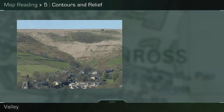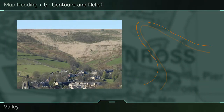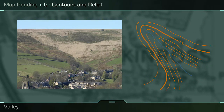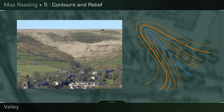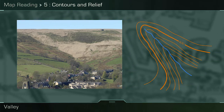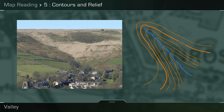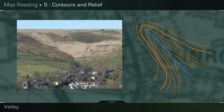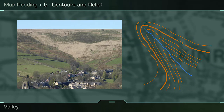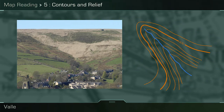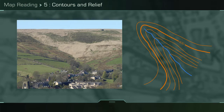A valley is a low area between hills, often with a water feature running through it. The key contour pattern of a valley is a series of V or U shaped contours, with the bends in the lines pointing uphill and the lower contour values in the middle.